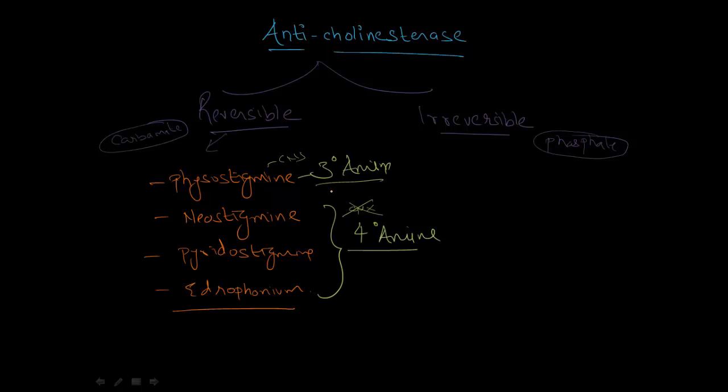Another thing is that since physostigmine is lipid soluble, it can work very well in ganglia because ganglia have fat around them, so physostigmine can easily cross that fat and work well on the ganglia. The quaternary amines, being lipid insoluble, cannot work well on the ganglia but can work very well at the neuromuscular junction.